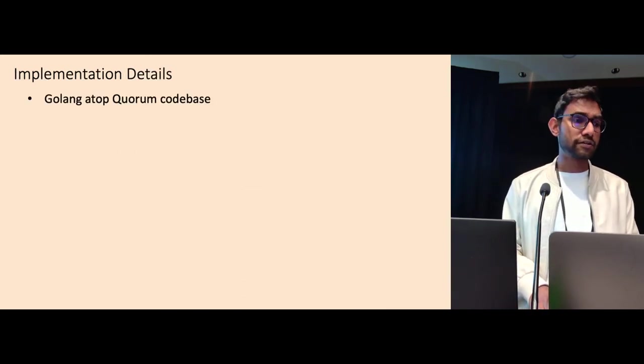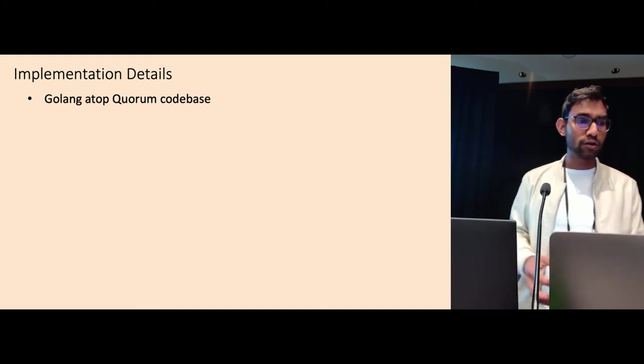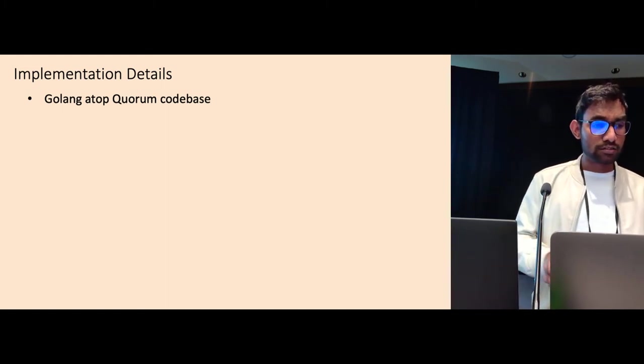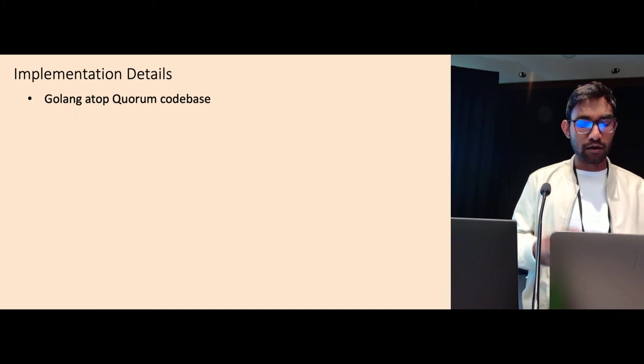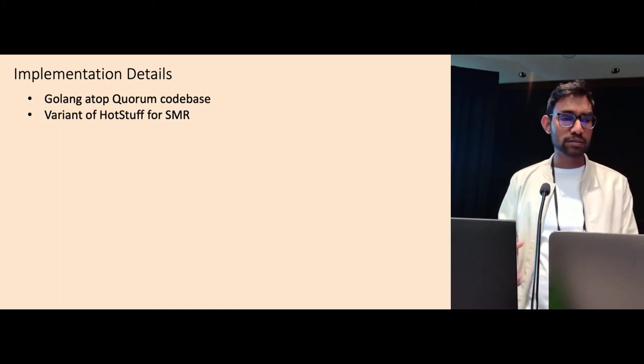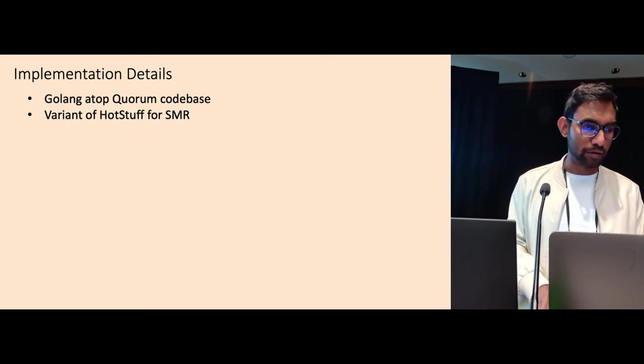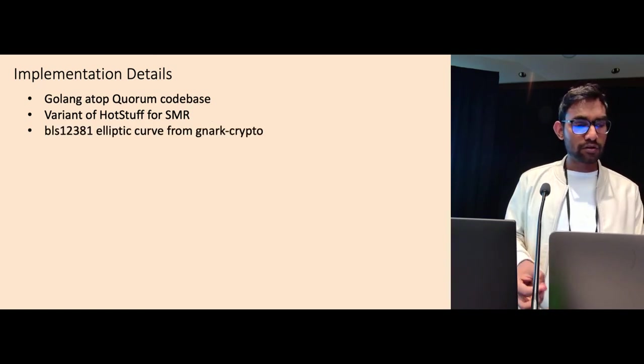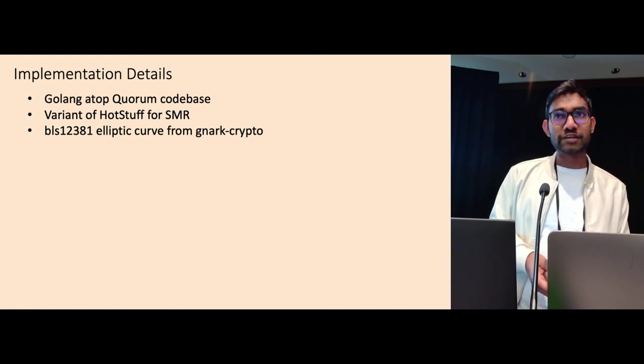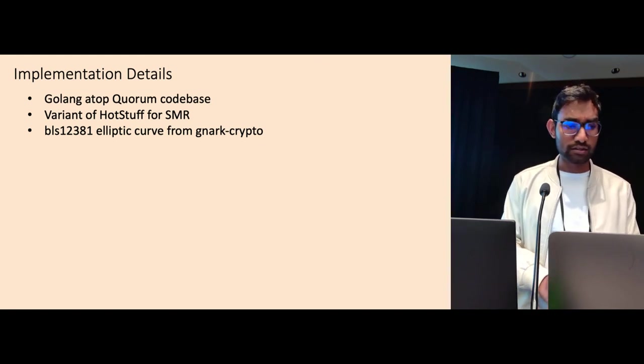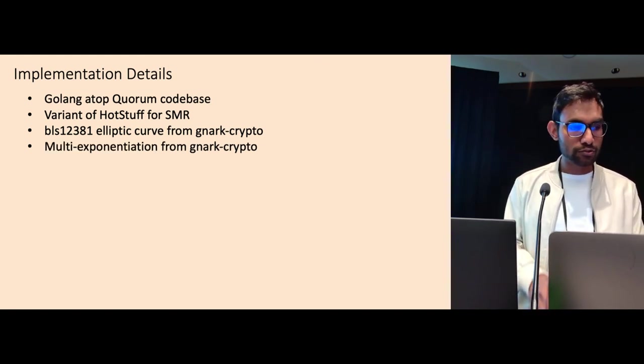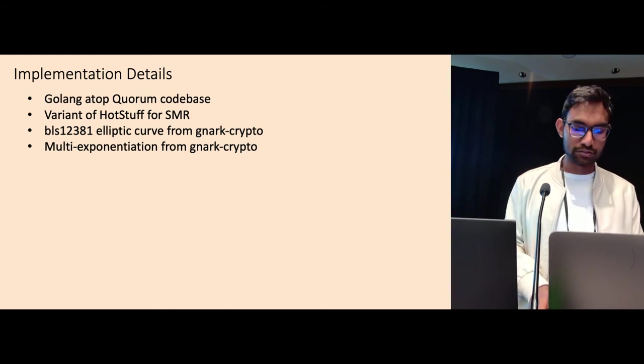Let's look at our implementation details. We implement our protocol using Golang atop this quorum code base which implements an SMR protocol. We change the SMR protocol to reimplement a variant of HotStuff, a popular SMR protocol. And we use, in our protocol, BLS12381 elliptic curve from Gnard Crypto Library and we also use their native multi-exponentiation protocol.